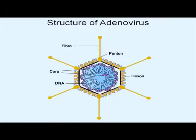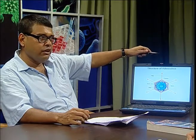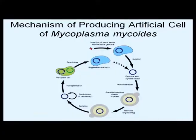In 2009, the structure of adenovirus was denoted. They showed the dreadful nature of this particular virus. This particular figure denotes the mechanism of producing an artificial cell.